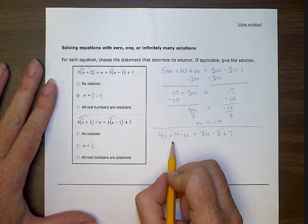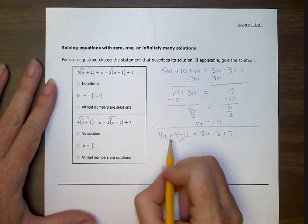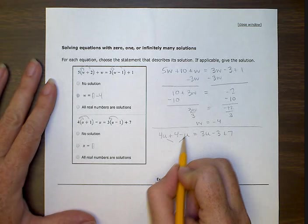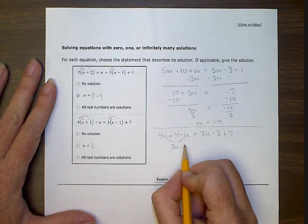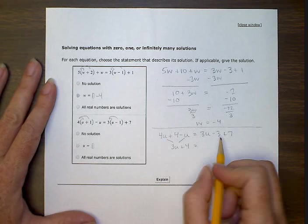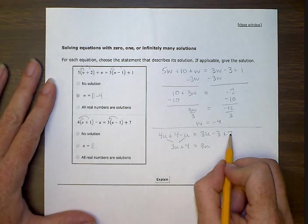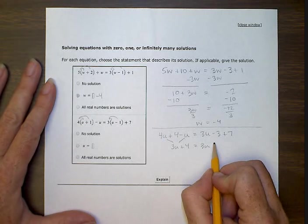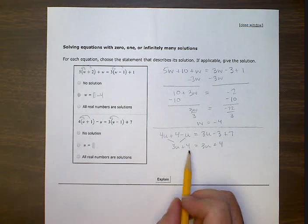We are going to combine like terms. Let's start with just doing the two u's on this side. 4u minus u gives us 3u. Four and negative one gives positive three. Plus we still have this four. On this side we have 3u. And then we have, combining these two, minus three and plus seven, we have four. Oh, look what happened. Now we have two things that are the same.